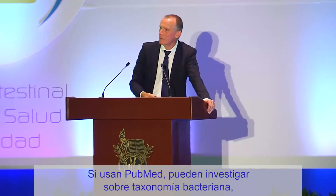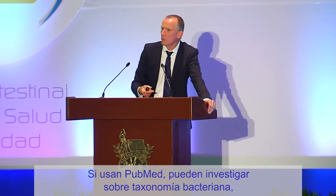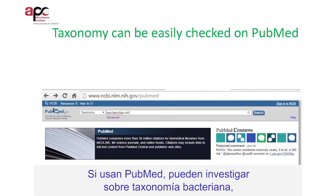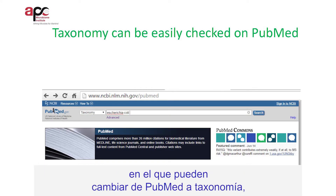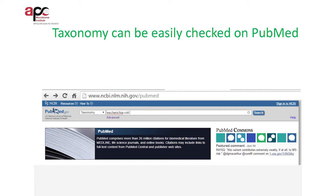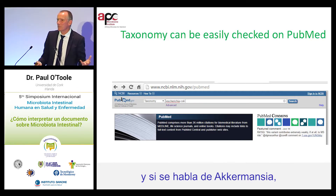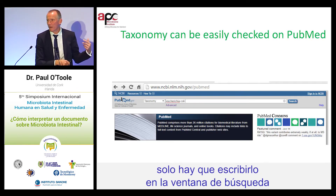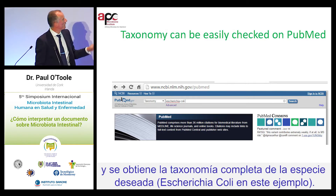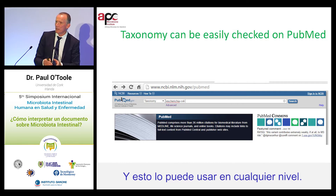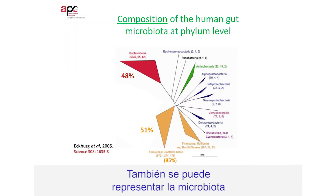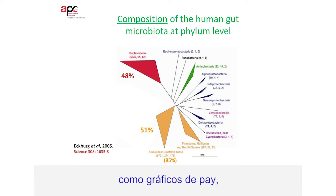If you can use PubMed, you can find out about bacterial taxonomy. There is a simple pull-down menu where instead of PubMed you change to taxonomy. If somebody talks about Akkermansia, you can simply put Akkermansia into that search window and find out the complete taxonomy, and you can use that at any level.